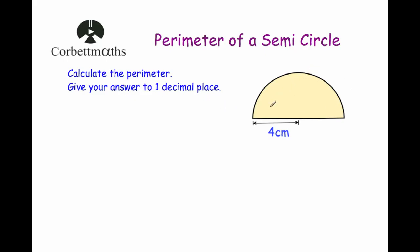So we've got our semicircle and it's got two parts. It's got its arc — this arc here — and it's also got its base there. So to find the perimeter of the semicircle we're going to need to work out the length of the arc, and then we'll add on the length of the base, and that'll tell us the whole way around the outside of the semicircle.